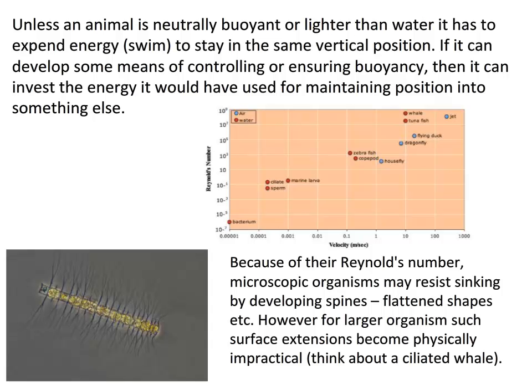Now let's look at buoyancy. Unless you're lighter than water or neutrally buoyant, you'll have to expend energy to maintain vertical position — you'll sink. For small microscopic organisms this isn't much of a problem because their high Reynolds number means they effectively live in an environment that feels like treacle; they develop spicules and spines to increase surface area and hold their position.